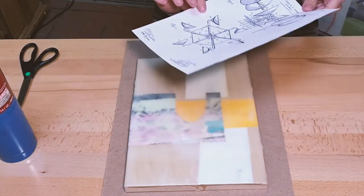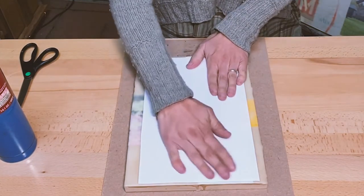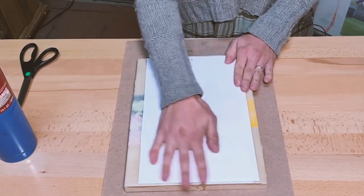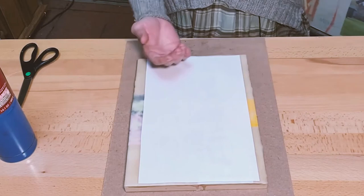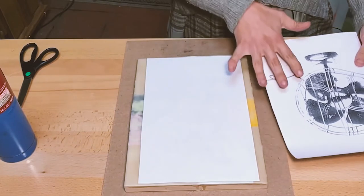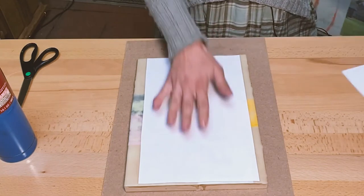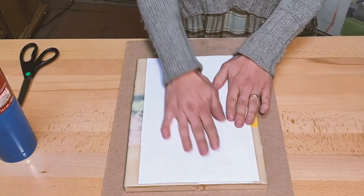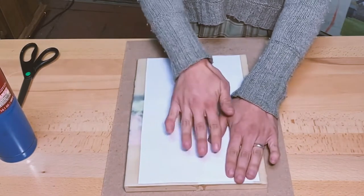Now I'm going to transfer, place my image onto my encaustic painting, and just smoothly start to burnish. Now you'll notice that I took the piece of paper and I put it face down, and if you think about it, your image is going to get mirrored on your encaustic painting. So if you have any writing, which I do in this case, you want to make sure that it's mirror imaged before you put it down on your encaustic painting. Otherwise it won't, it'll read backwards.